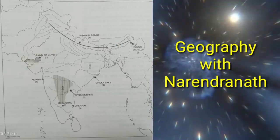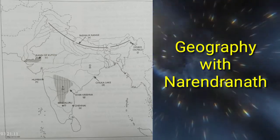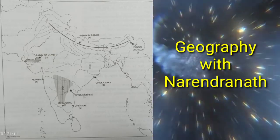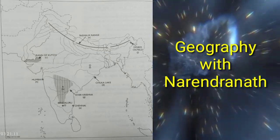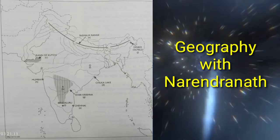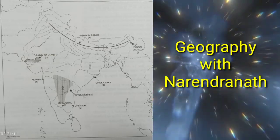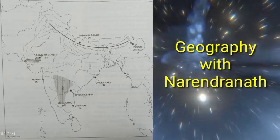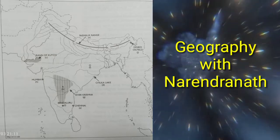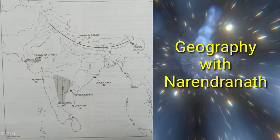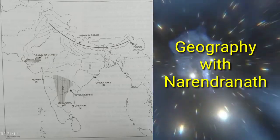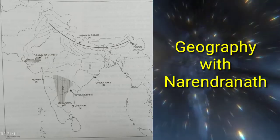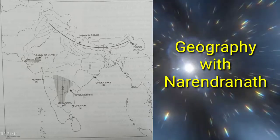'I' — mark and name the oil field in Northeast India. Mark with a dot and name Bengaluru — 'J'.